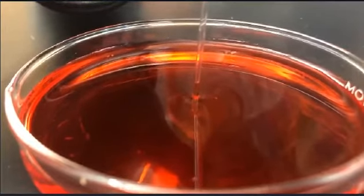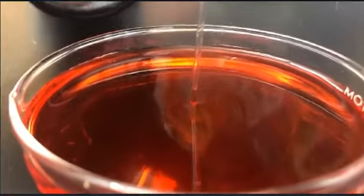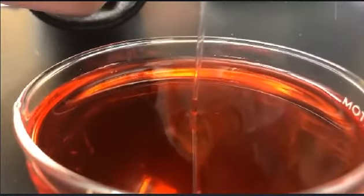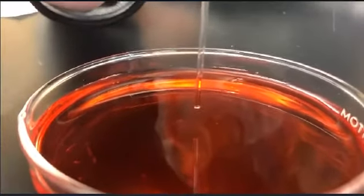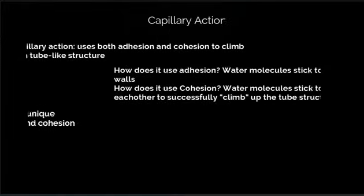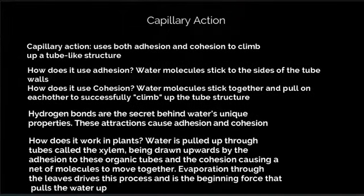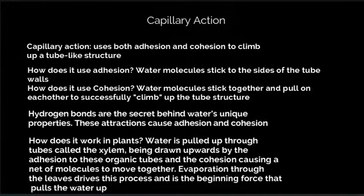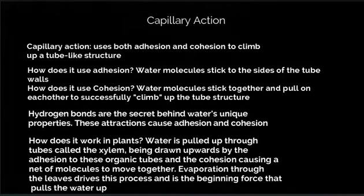The xylem travels into the leaves, where the sun's energy evaporates the water released from the leaves' pores. This evaporation pulls more water with it through cohesion, causing the cycle of pulling water up through the leaves and evaporating it to continue.